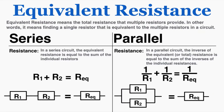Equivalent resistance is really just a fancy way of saying total resistance — specifically, the resistance that multiple resistors provide together. It means finding a single resistor that is equivalent to the multiple resistors in a circuit. In a series circuit, the equivalent resistance equals the sum of the individual resistances. In a parallel circuit, the inverse of the equivalent resistance equals the sum of the inverses of the individual resistances. The parallel rule is pretty tricky.